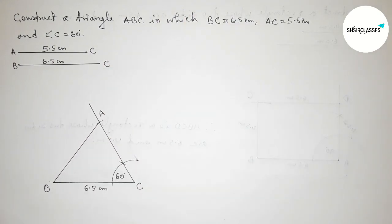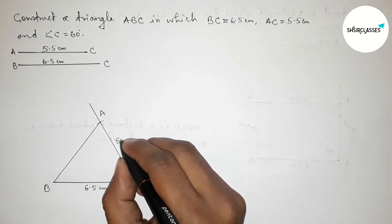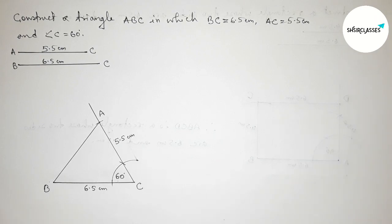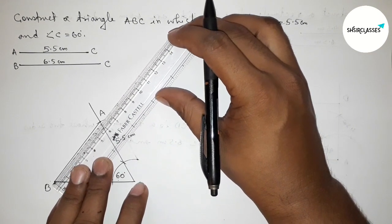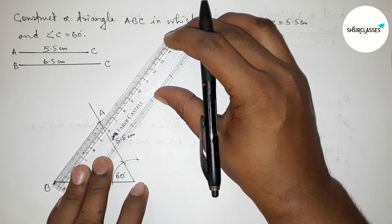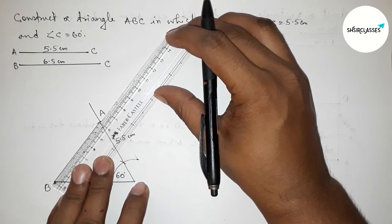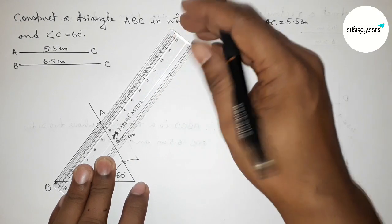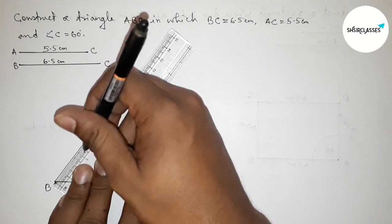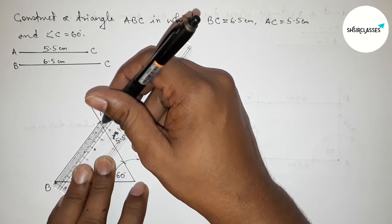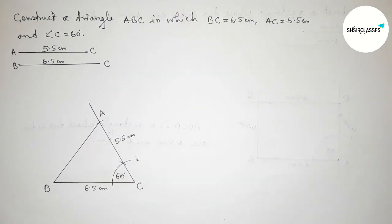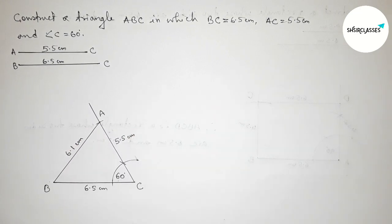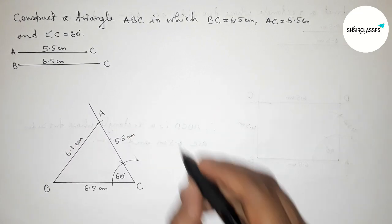AC equals 5.5 centimeters. Next, measuring the length of side AB with the scale — this is approximately 6.1 centimeters. So AB equals approximately 6.1 centimeters.